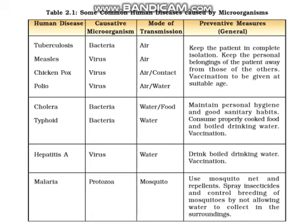Along with tuberculosis, measles, chickenpox, and polio are three diseases caused by viruses. The mode of transmission is through air, contact with each other, or through water. These patients must be isolated in a single room, their belongings should be kept apart from those of healthy persons, and vaccinations should be given at a suitable age.